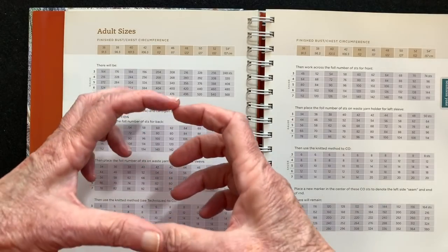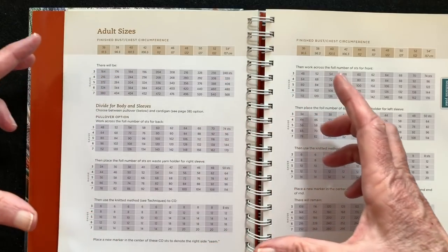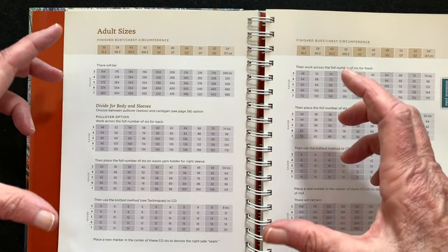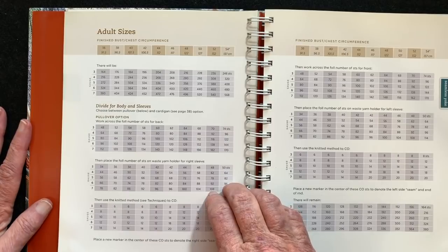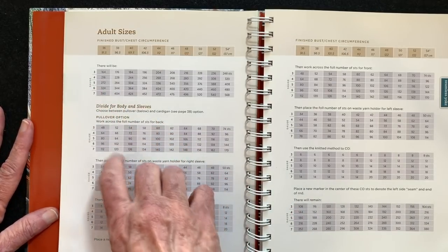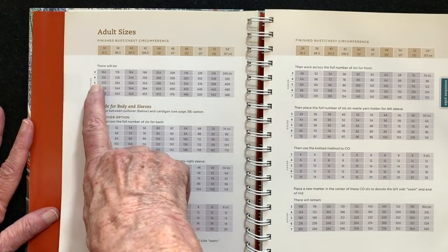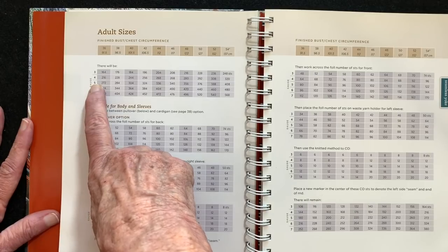So you start out with a small neck and your sweater gets bigger and bigger and bigger to the outside circumference of the yoke and then you divide for the body and sleeves. And we'll use a five stitches per inch stitch count just to make things easy.